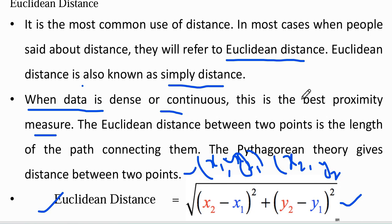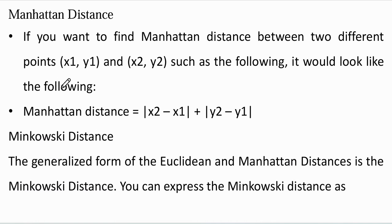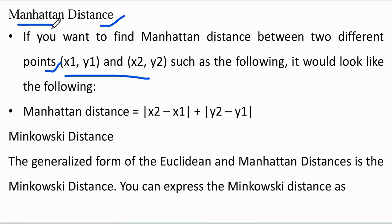If we have three points — x1, y1; x2, y2; and x3, y3 — then to calculate the distance we extend the formula accordingly. Now, another distance metric to find distance between two points: if we take two points x1, y1 and x2, y2, we use another distance method called Manhattan distance. The Manhattan distance formula is: modulus of (x2 minus x1) plus modulus of (y2 minus y1).